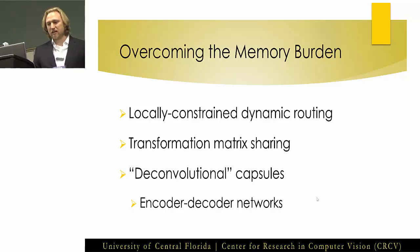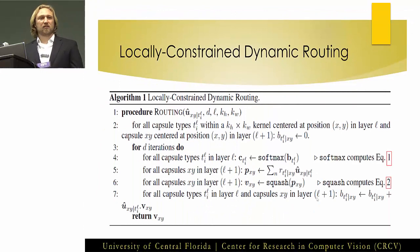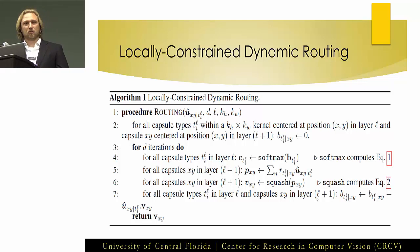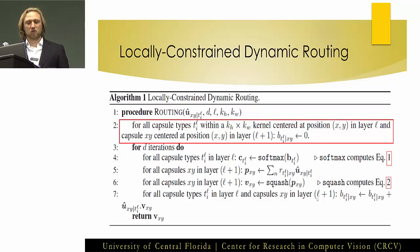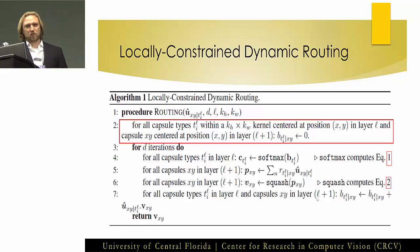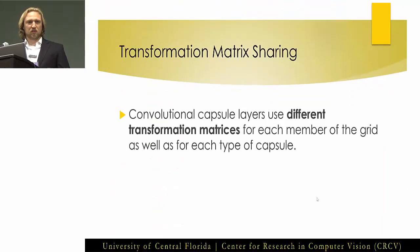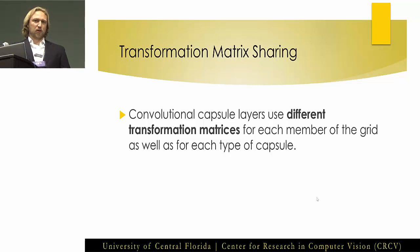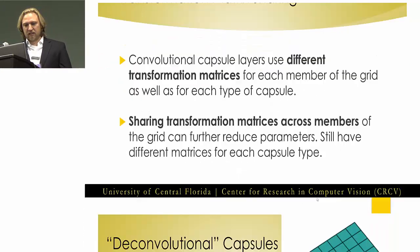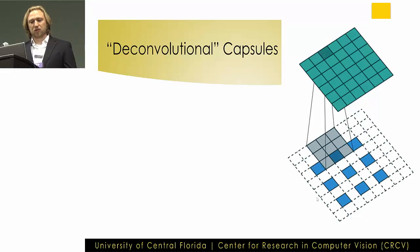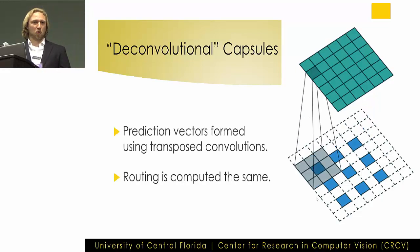Here's the locally constrained dynamic routing algorithm. The key line is where we constrain our prediction vectors to some kernel within the grid, and those are the predictions we route for each parent based on this local kernel. For transformation matrix sharing, in a traditional convolutional capsule when first proposed they used different transformation matrices for every member of the grid as well as for each capsule type. In our work we restricted this to only per capsule type, sharing transformation matrices across members of the grid. Deconvolutional capsules form prediction vectors using transposed convolutions, with routing performed exactly the same — it's just how we form our predictions.